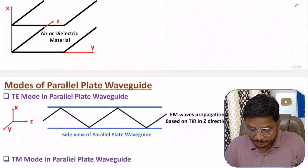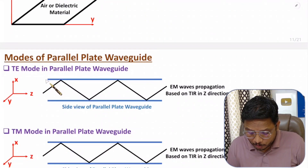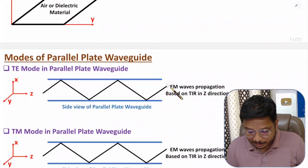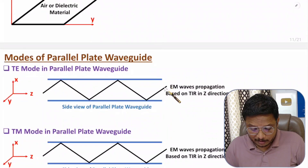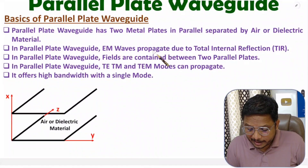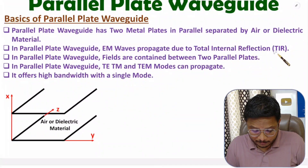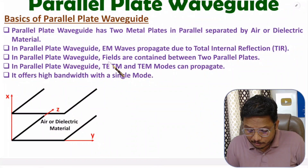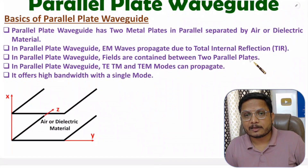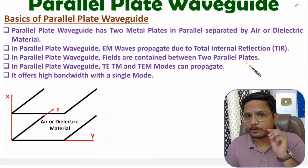In parallel plate waveguide, EM waves propagate due to total internal reflection. If you observe the side view, here we have two parallel plates. The EM wave is propagating based on total internal reflection. Fields are contained between the two parallel plates.